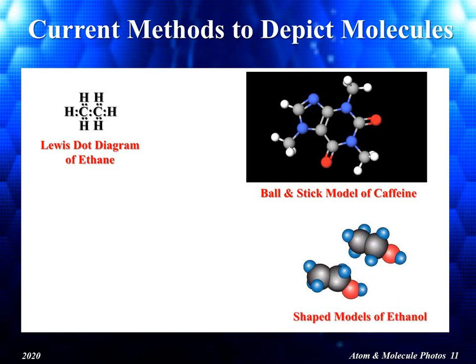Another popular way to show the structure of molecules is with shaped models, as shown on the bottom right for a model of ethanol. In this shaped model, the oxygen atom is shown as a red ball, while the carbon atoms are grey and the hydrogen atoms are blue.